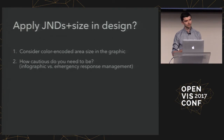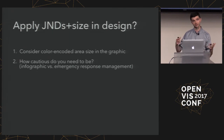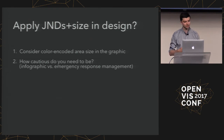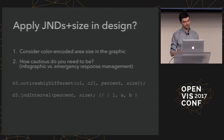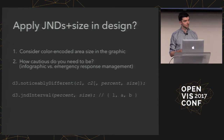One way to apply this to design is considering color-encoded area size in the graphic. Designing for desktop versus mobile involves very different visual angles even with the same pixels. Various situations call for various levels of discriminability — making an infographic versus an emergency response management tool obviously calls for different conservativeness. In D3, you load the module and get access to the JND function — give it two D3 colors with optional percent and size, and you get a boolean true or false.